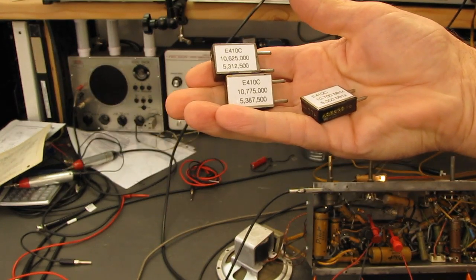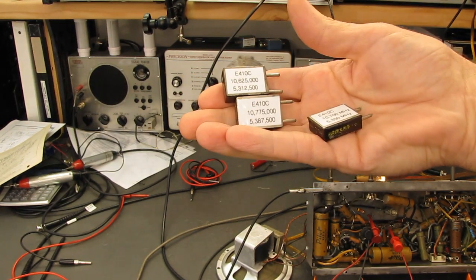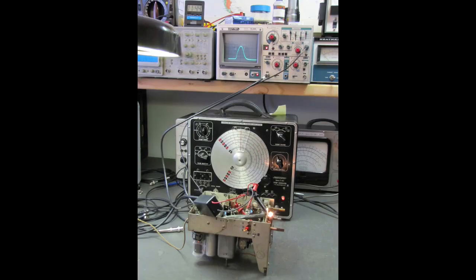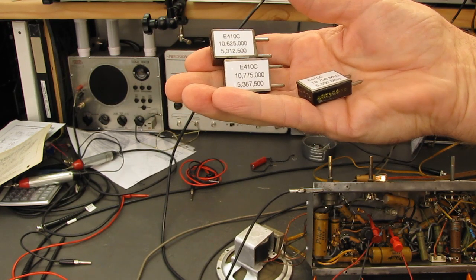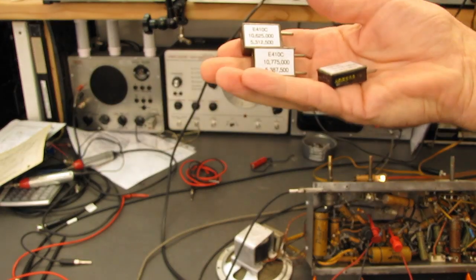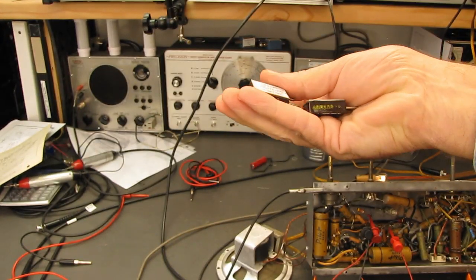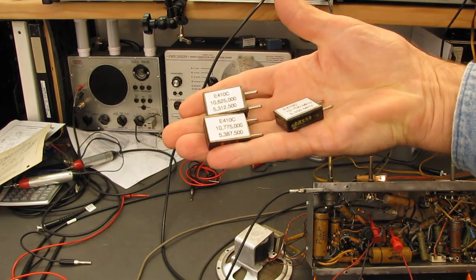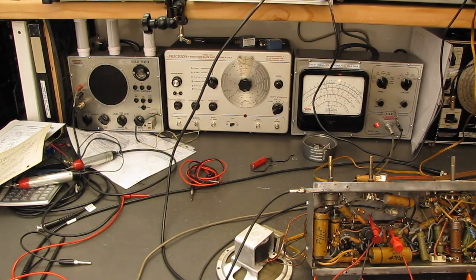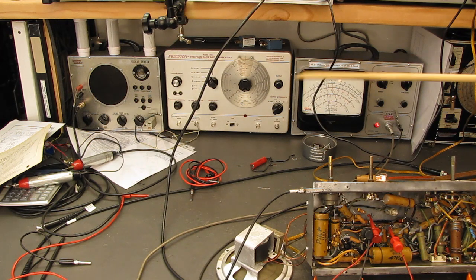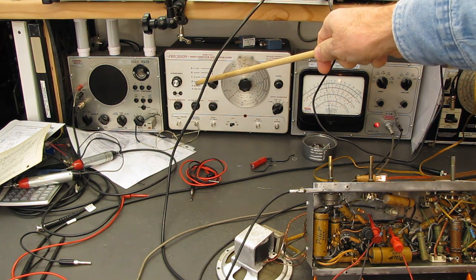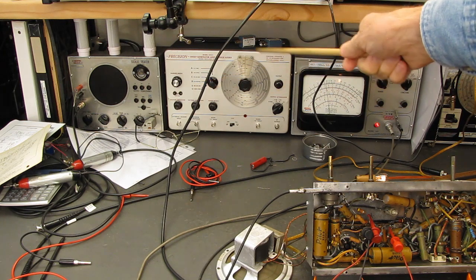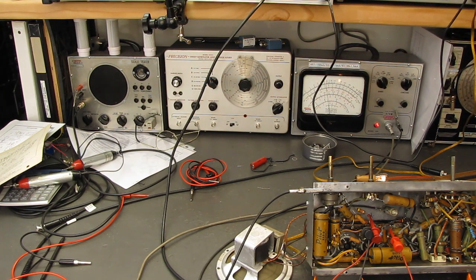We mark the frequencies or I mark the frequencies using these crystals that I have custom ground for the center of the IF at 10.7, and then 75 kilohertz higher at 10.775, and 75 kilohertz lower at 10.625. The two signal generators that I am not using, the first ones, this is one of them, and this is the other one.